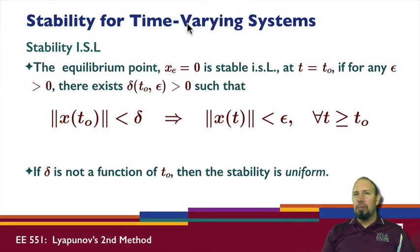When we talked about stability in the sense of Lyapunov before, we were actually talking about time-invariant systems. Notice that the delta here in general may be a function of t0. If it is not a function of t0, then the stability is called uniform stability.